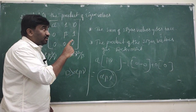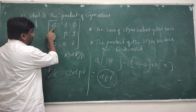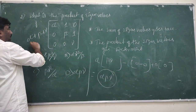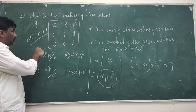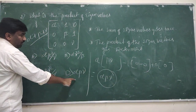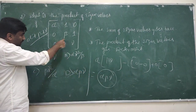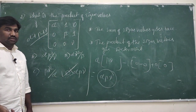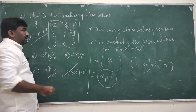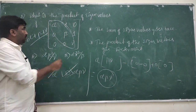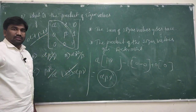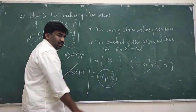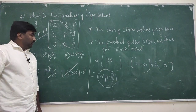The product of eigenvalues equals the determinant, which is αβγ. The trace is α + β + γ, which is the sum of diagonal elements. Therefore, the product of eigenvalues is αβγ, and option D is correct.